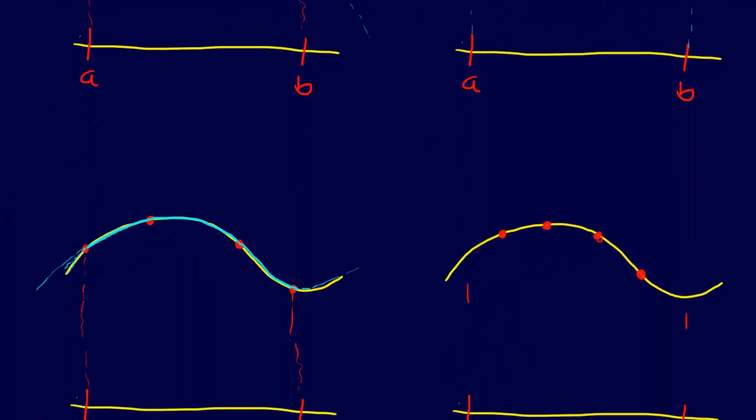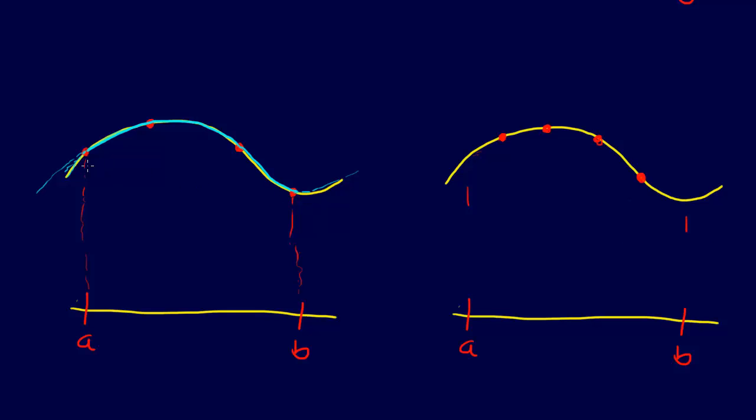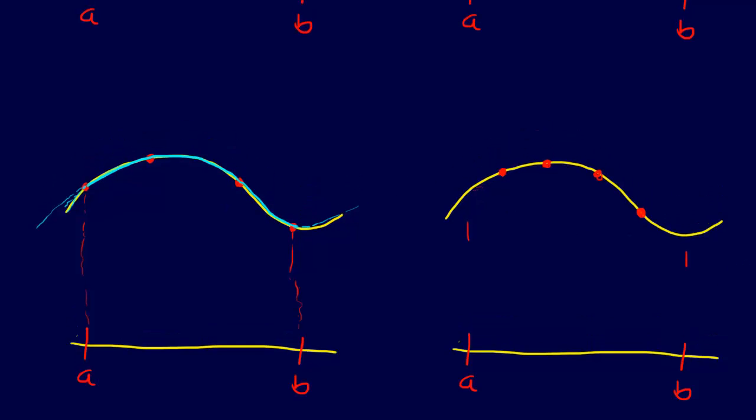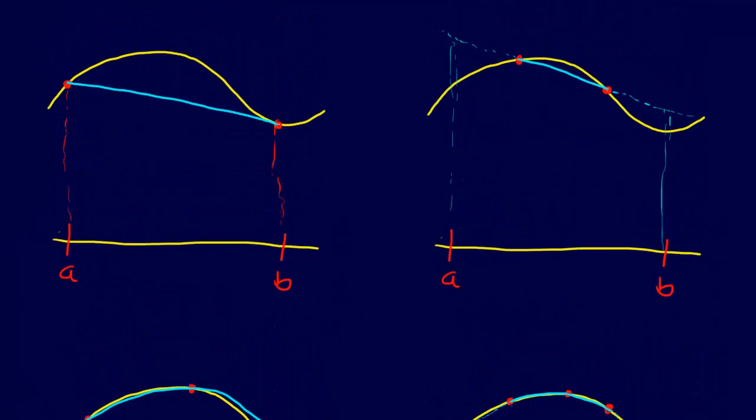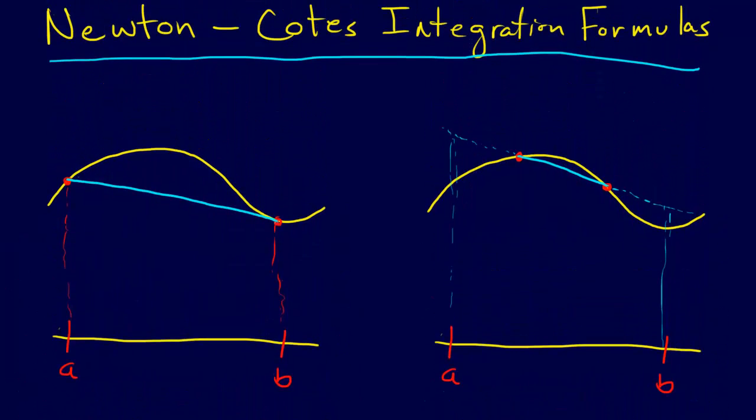We could also do the same thing for a cubic function, where we have four data points and fit our curve to the four data points with a cubic polynomial, and then we just integrate that cubic polynomial. So this is the idea behind the Newton-Cotes integration formulas. In particular, we have two methods.